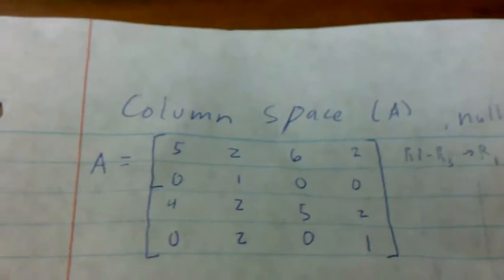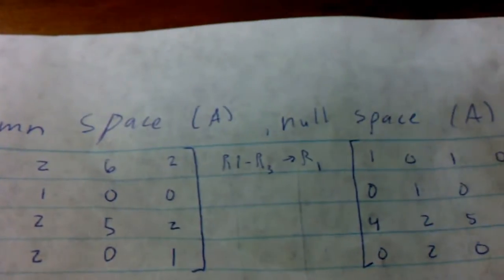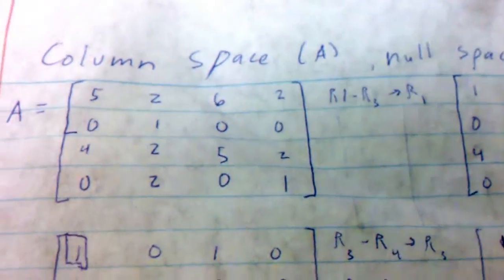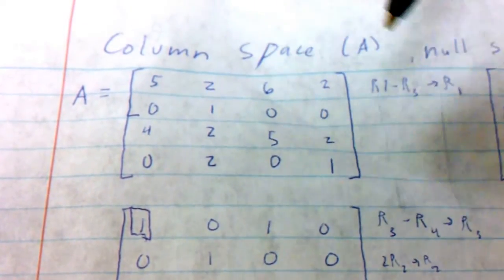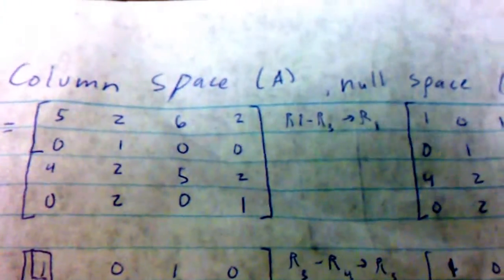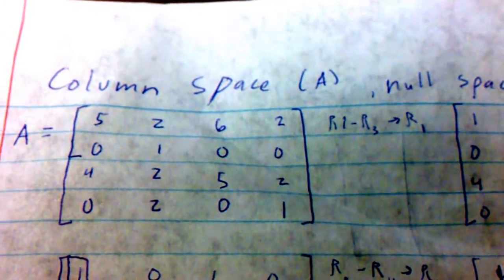So again, that was how you cover column space and null space in linear algebra for this matrix A, this 4x4. Thank you for joining me today. And, Go Tech!